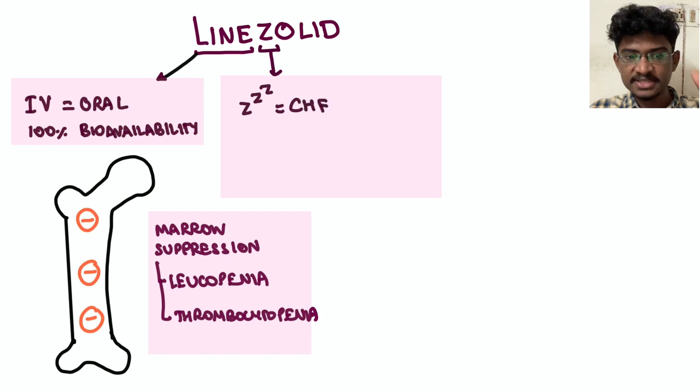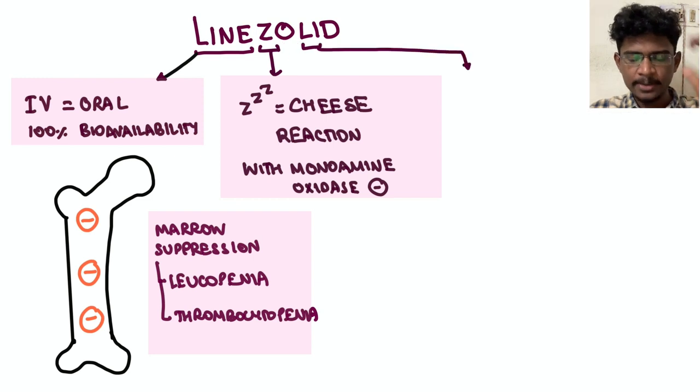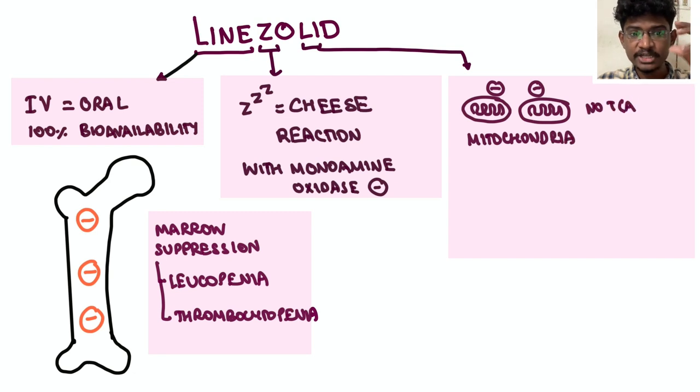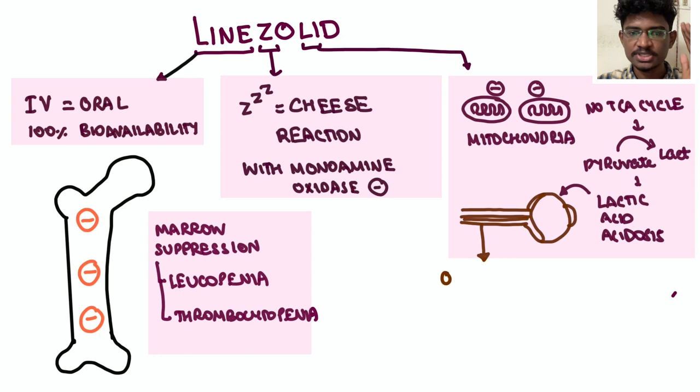Line, meaning IV line - like oral and IV bioavailability are exactly the same, 100% bioavailability. Next, line-bones: it inhibits the bones, bone marrow suppression, causing leukopenia as well as thrombocytopenia. This thrombocytopenia usually happens after two weeks of therapy. Next, Z-Z for cheese - cheese reaction if you give with monoamine oxidase inhibitors.